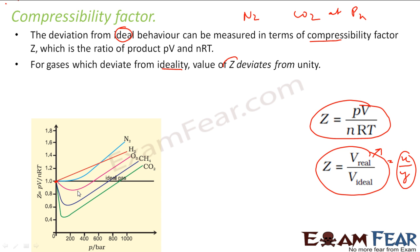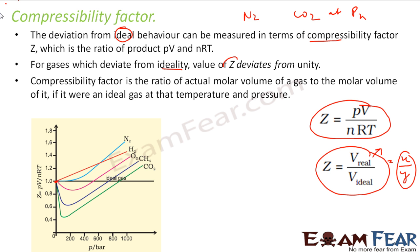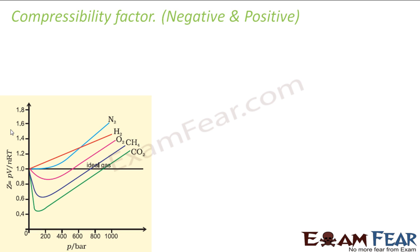So the value of z also changes. It is not that the value of z is constant for oxygen or nitrogen or hydrogen. The compressibility factor or the deviation of the ideal gas also changes for a given gas based on the pressure. See the new formula which I have given, the compressibility factor is nothing but volume real by volume ideal. So there are two values of compressibility factor. It can have a positive value or it can have negative value also. For ideal gas, the value of z is 1.